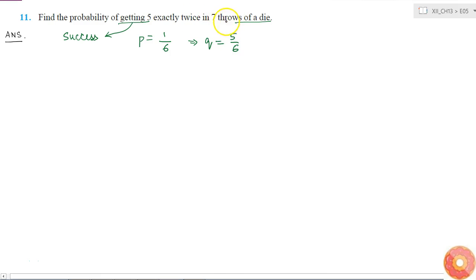And we are given that there are 7 throws of the die. So n is equal to 7.